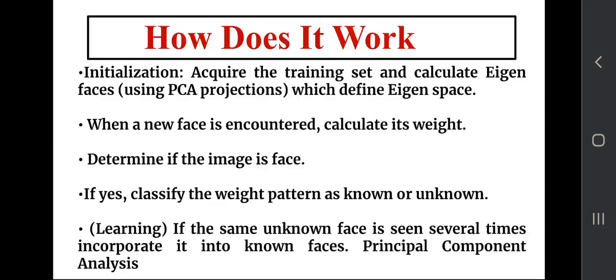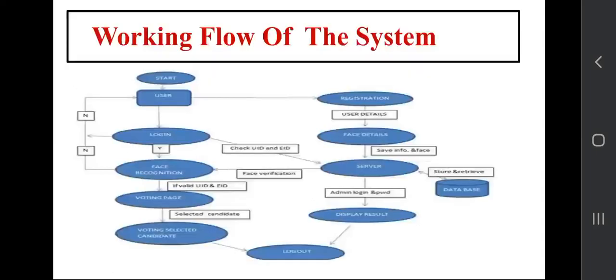Regarding how the system works: initially, the system acquires the training set and calculates eigenfaces, which define the eigenspace. When a new face is encountered, the system calculates its weight and determines if the image is a face. If yes, it classifies the weight pattern as known or unknown. If the same unknown face is seen several times, it is incorporated into the known faces. This follows the principal component analysis approach, in which faces form a cluster in image space.